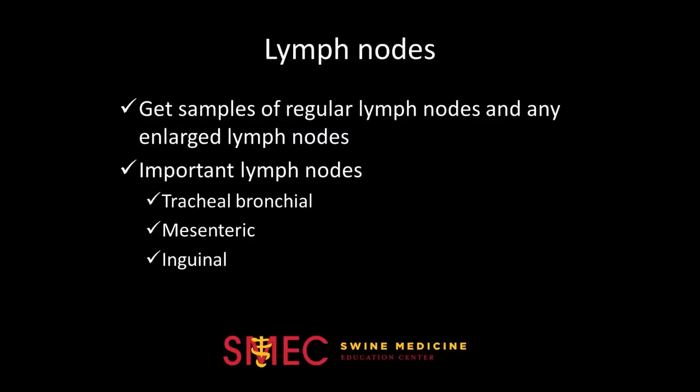Begin by taking out your pluck and get both fixed and fresh samples of lymph nodes and tonsils. Pay special attention if lymph nodes are enlarged and make sure to get samples of those, along with samples of regular lymph nodes. Some very important lymph nodes to sample would be the inguinal, tracheal, bronchial, and mesenteric lymph nodes. Different lymph nodes can be placed in the same container because the D-Lab can differentiate between them.